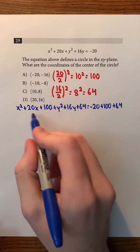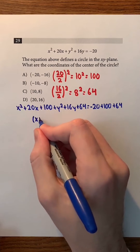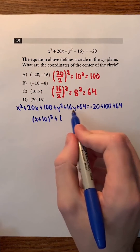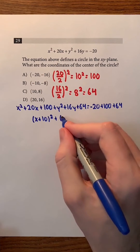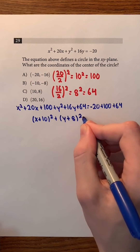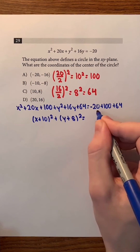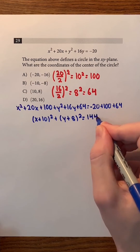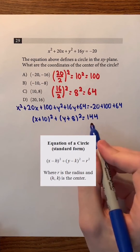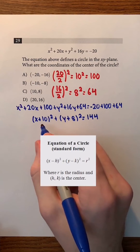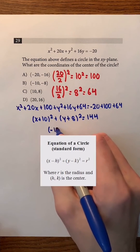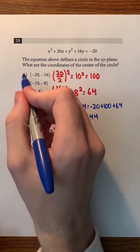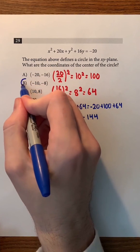X squared plus 20x plus 100 factors as (x + 10) squared. And y squared plus 16y plus 64 factors as (y + 8) squared. Negative 20 plus 100 plus 64 is 144. If you remember the standard form of the equation of a circle, we can see that the center of the circle is (negative 10, negative 8), which is answer choice B.